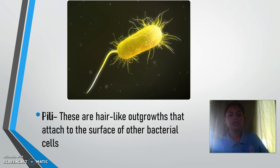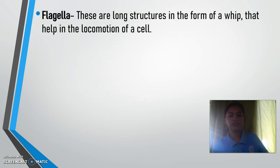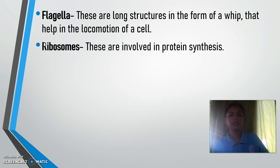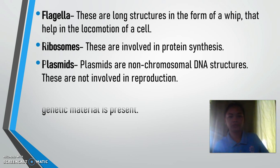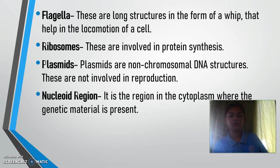Pili are hair-like outgrowths attached to the surface of other bacterial cells. Flagella are long structures in the form of a whip that help in the locomotion of a cell. Ribosomes are involved in protein synthesis. Plasmids are non-chromosomal DNA structures and are not involved in reproduction. The nucleoid region is the region in the cytoplasm where the genetic material is present.